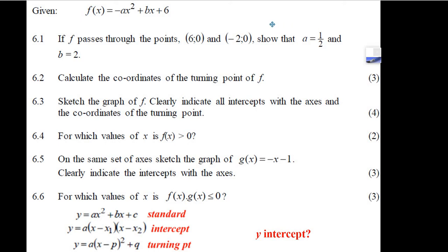Okay, we're going to try a parabola question now, question 6. We'll do the first three questions. We've got a parabola here: f(x) equals minus ax squared plus bx plus 6. We get quite a bit of information from this. First, we know it's a parabola. This negative means it's upside down, so it's going to be this kind of shape.